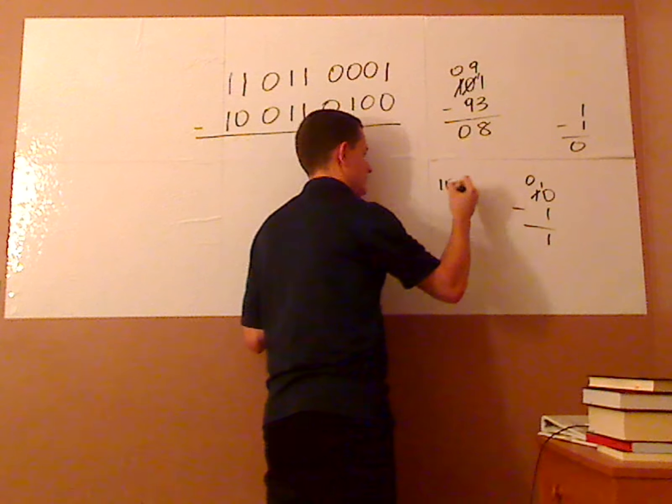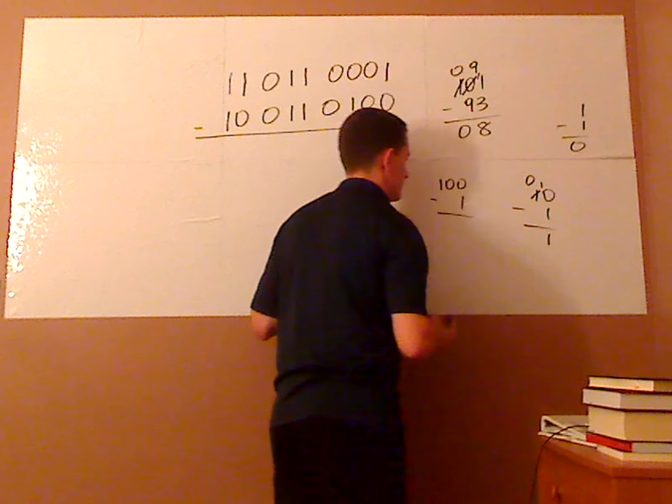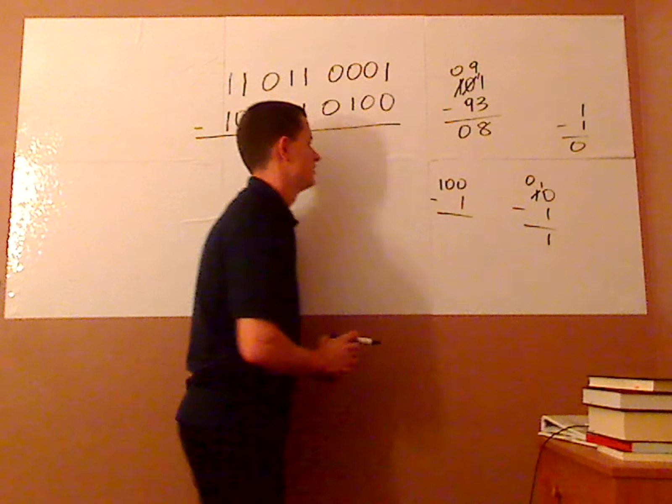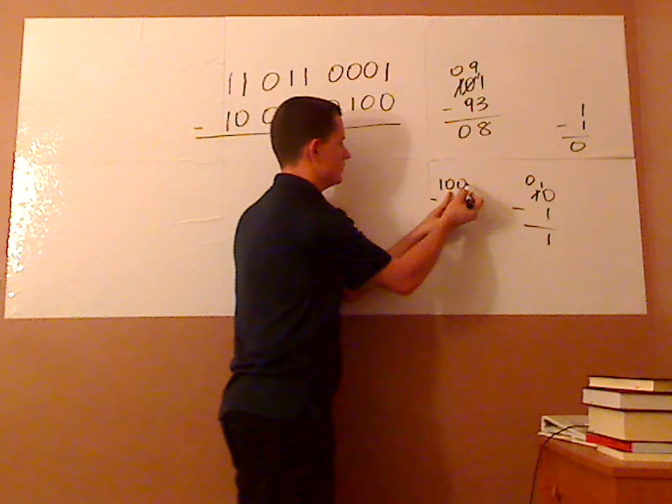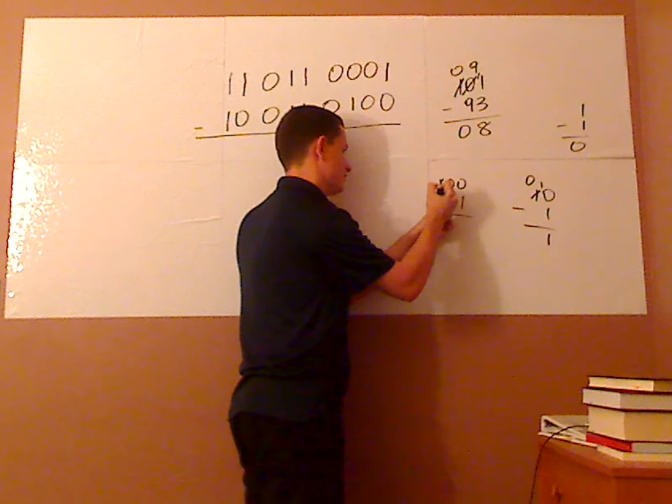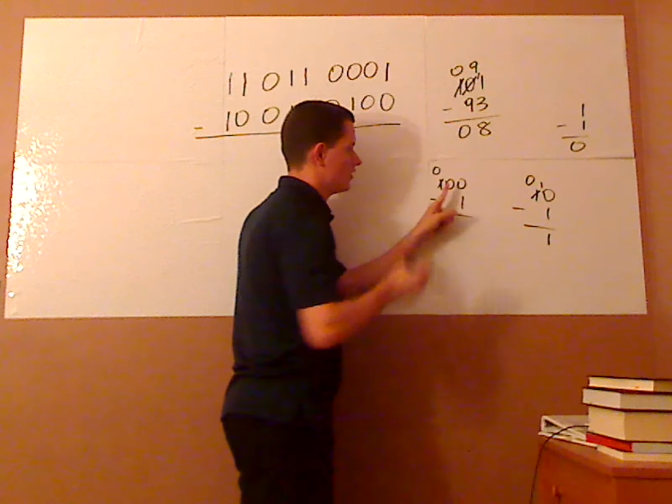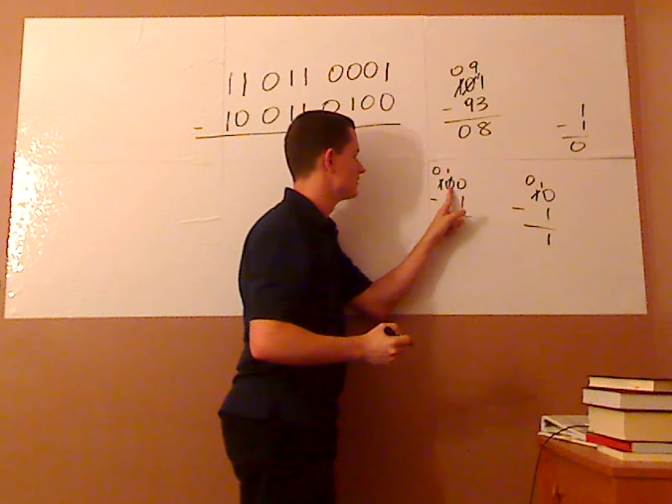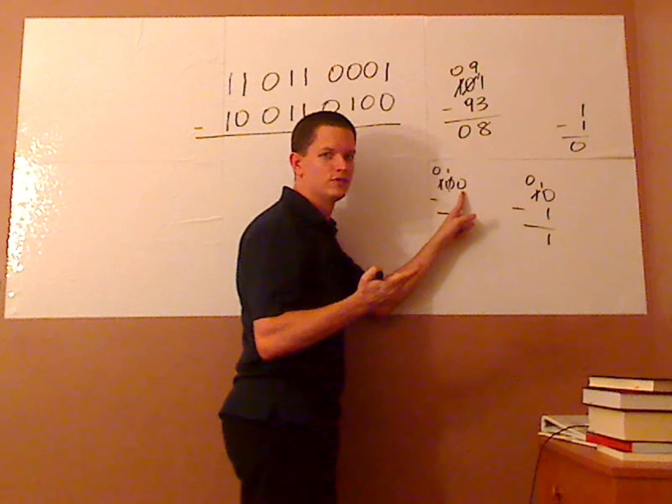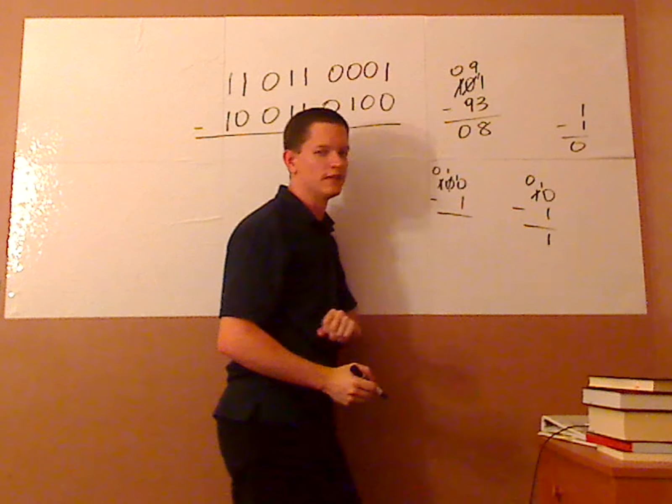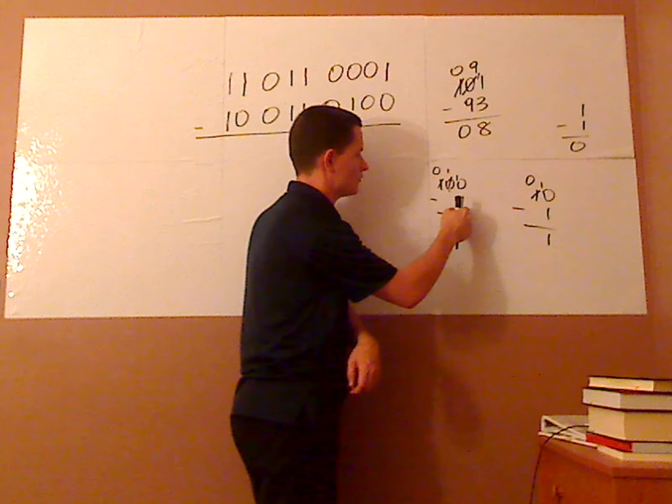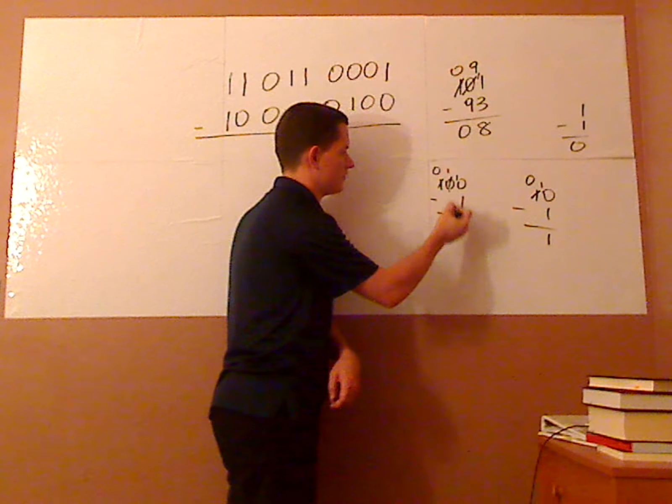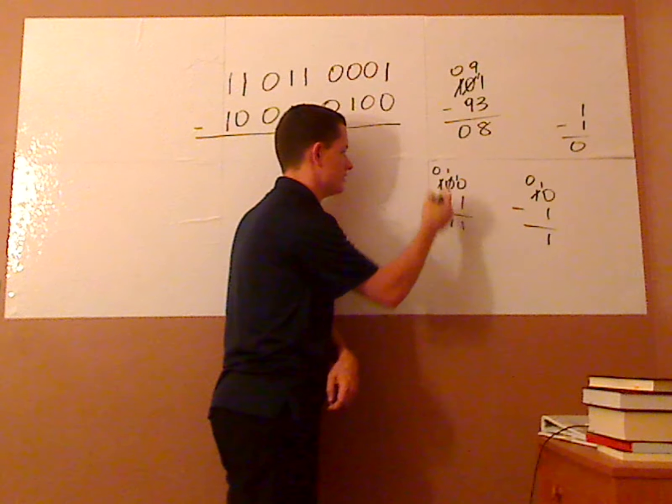Now what if I have something like this? I have 100 minus 1. What's 100? So what you can do is you want to go this direction and then this direction. You need to break that 4 apart. Remember, this right here is a 2. So I'm going to put just one of those, 1, 2, making this 1. And then I have 2 more, which I can do that. So then I subtract, so this is 10 minus 1, or 2 minus 1, which is 1. This is 1 minus 0, which is 1, and then it's 0 minus 0.